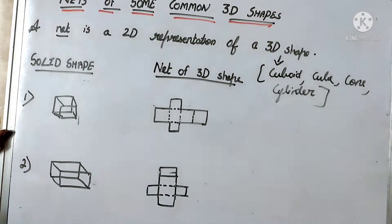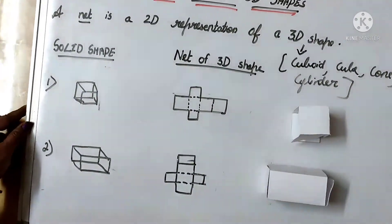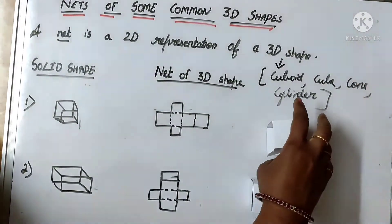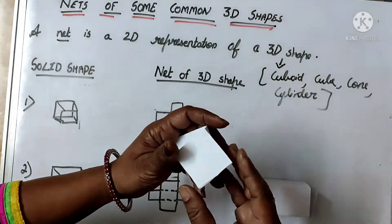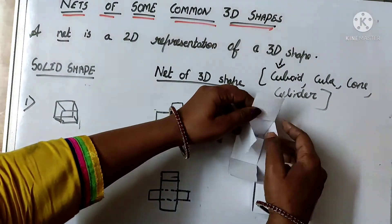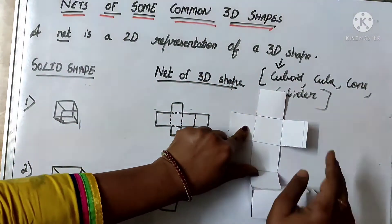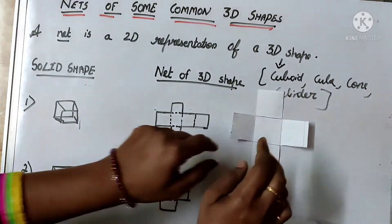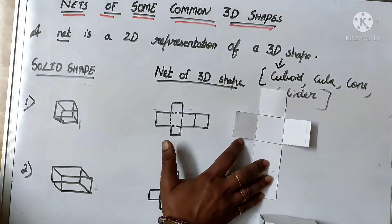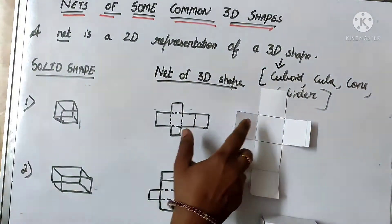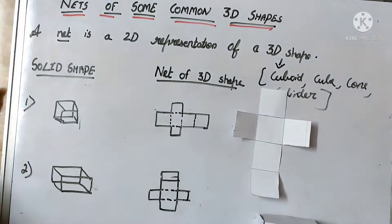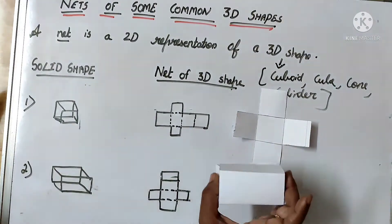Now with an example I will be showing you — children, you can see this is a cube I have made with paper. Now this is a cube. If I open a cube, could you see? It gets opened in this form. So this is the net of a cube. If you open a cube, this is how it will appear.